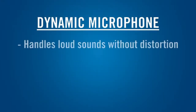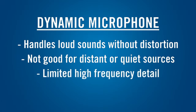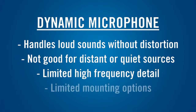Dynamic microphones can handle even the loudest sounds without overloading, but this also means they're not well suited to distant micing of quiet sources. Because the sound waves have to move the mass of the diaphragm and the voice coil, they usually have limited high-frequency detail, so they're better for vocals or horns than for stringed instruments. The size of the magnet makes it difficult to make a dynamic mic very small, which can limit your mounting options.